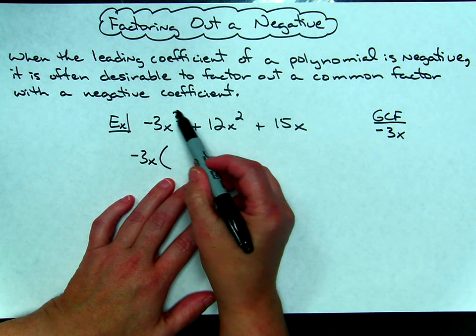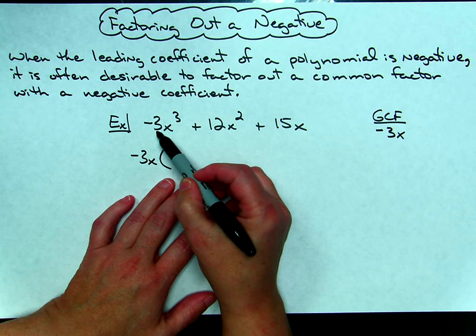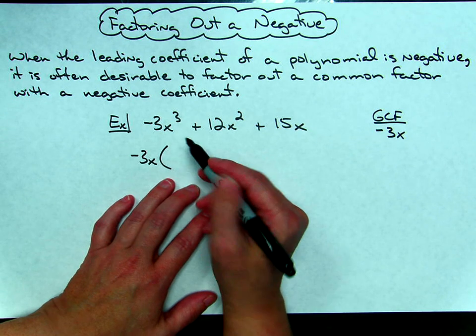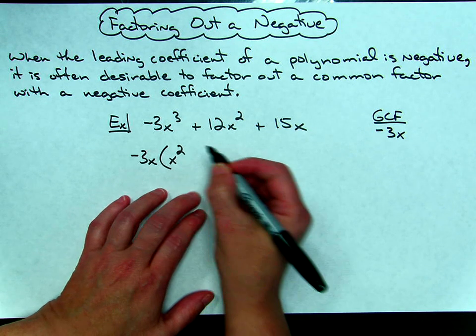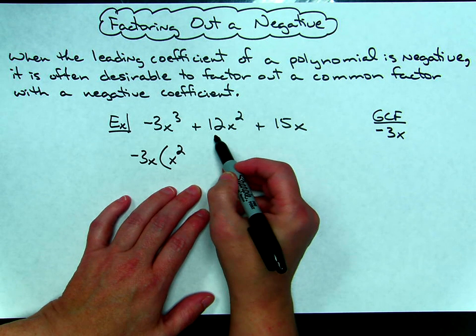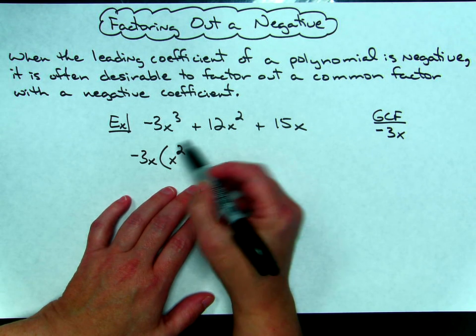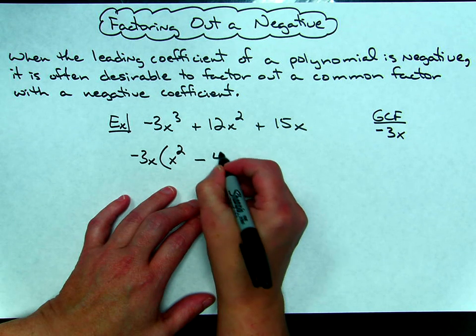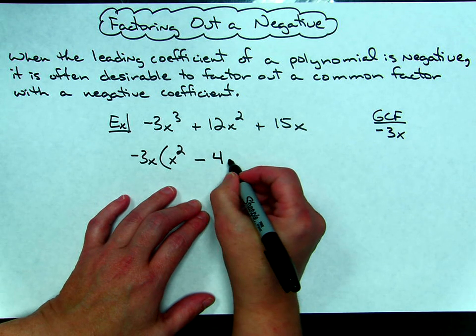In this first term I've got a negative 3, I'm taking that out. I've got x to the third, I'm going to only take out one of those, it's going to leave me with an x squared. Middle term, I've got a 12 and I'm going to take out a negative 3, that's going to leave me with a negative 4. I've got two x's and I take out one, that's going to leave me with one.